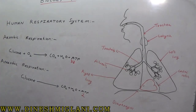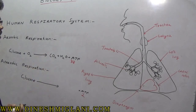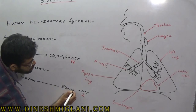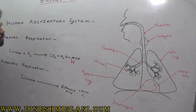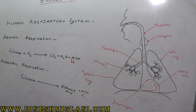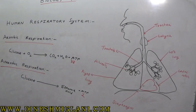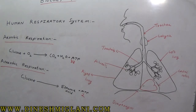Another difference between aerobic and anaerobic respiration is that anaerobic respiration also produces ethanoic acid as a byproduct, which is very toxic. Small organisms like yeast sometimes perform anaerobic respiration. In our body, only aerobic respiration occurs, where we utilize oxygen.